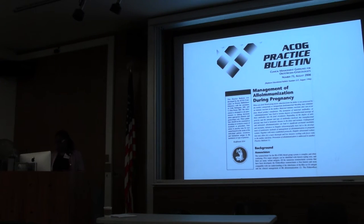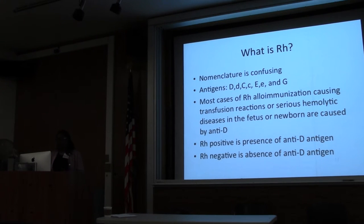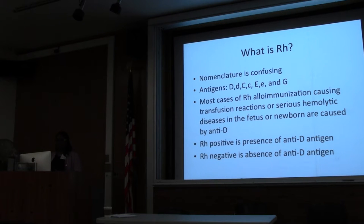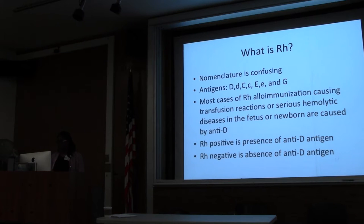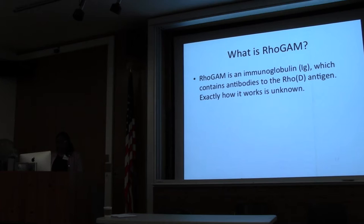The nomenclature of what RH is can be confusing. These are the different antigens, and in most cases of RH allo-immunization — which is what we're trying to prevent in the mother — it is the anti-D antigen. RH positive is the presence of the D antigen, and RH negative is its absence. RhoGAM is an immunoglobulin, IgG; it contains antibodies to the D antigen. Exactly how it works is not fully known.